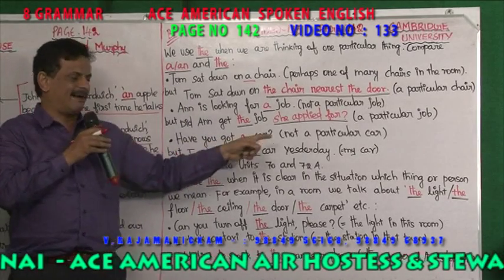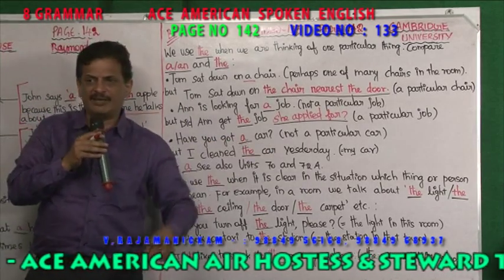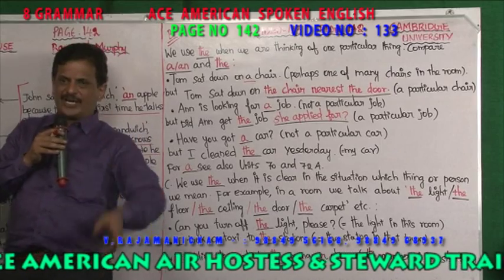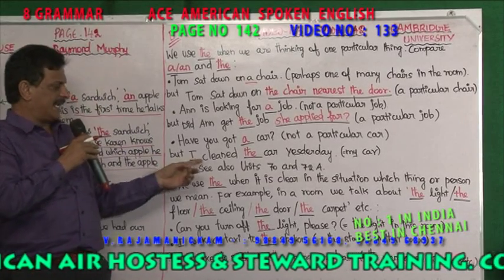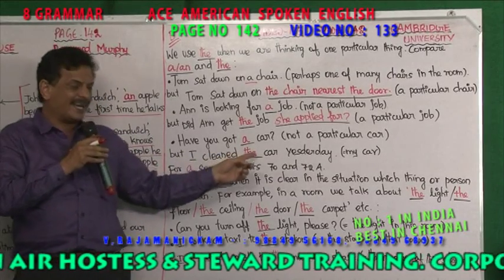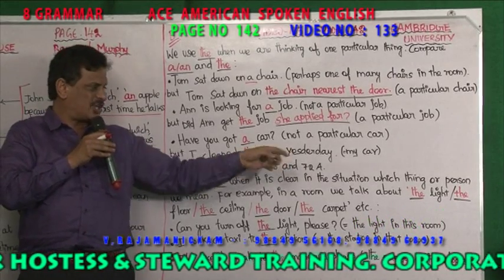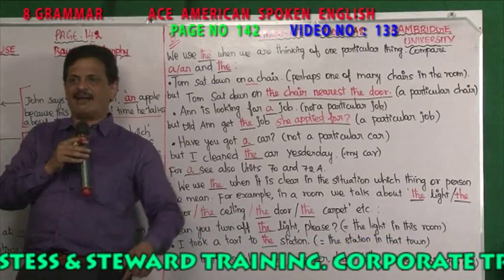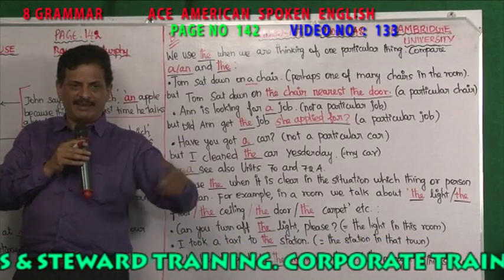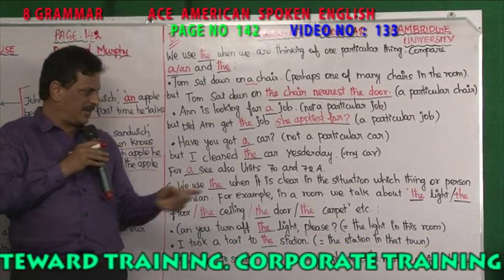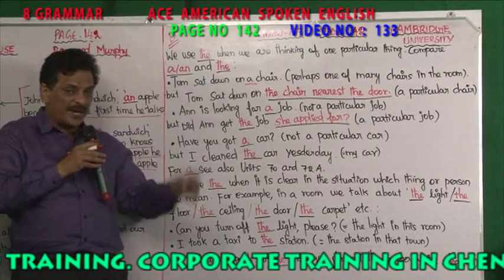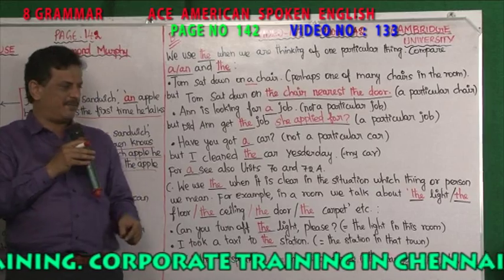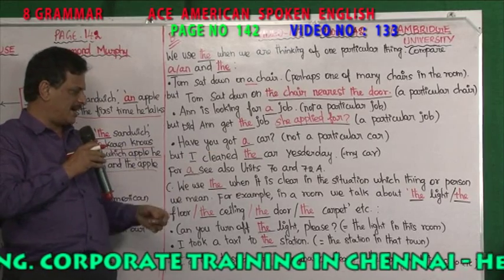Have you got a car? Not a particular car — any car. But I cleaned the car yesterday — my car. Do you have any car? I cleaned the car yesterday means my car.